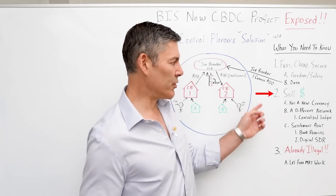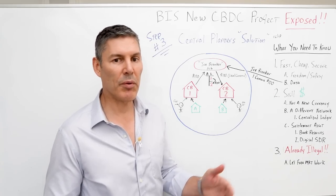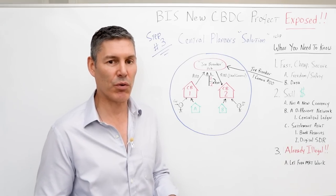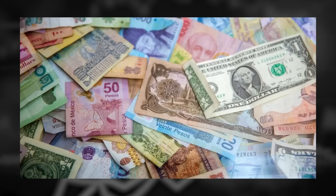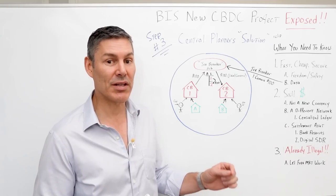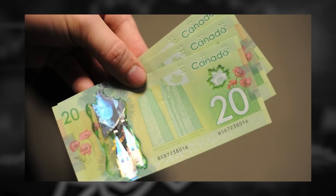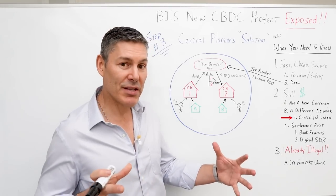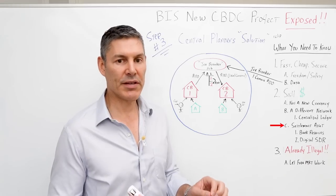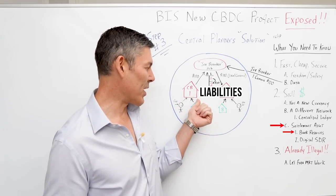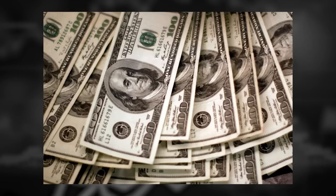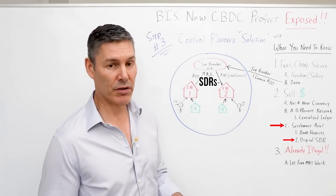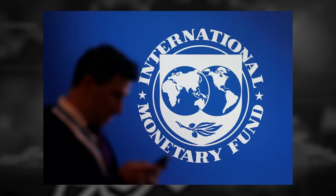The next thing to point out is this system is still using dollars or the local currency — it isn't implementing FedCoin per se. When they gave an example in the video, they used the terminology of the local currency, calling it central bank money, but that central bank money is still denominated in US dollars, Canadian dollars, or Chinese yuan. This isn't a new currency like most people think — it's simply a different, consolidated, centralized network and ledger system. The settlement asset in local domestic economies would be the liabilities of the central bank — bank reserves denominated in dollars in the US — and the settlement asset connecting the two central banks would be SDRs, the reserve asset that only the IMF can create.